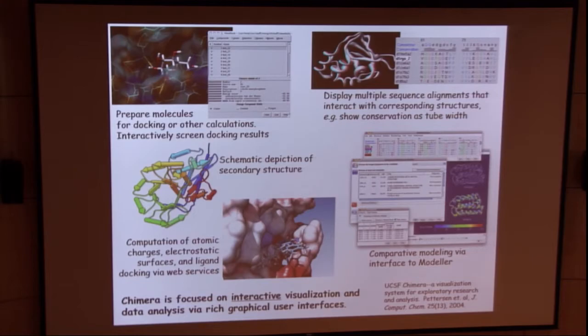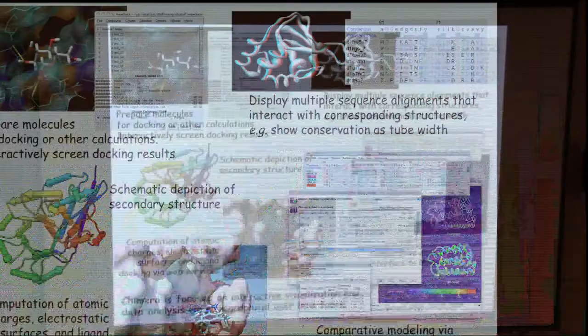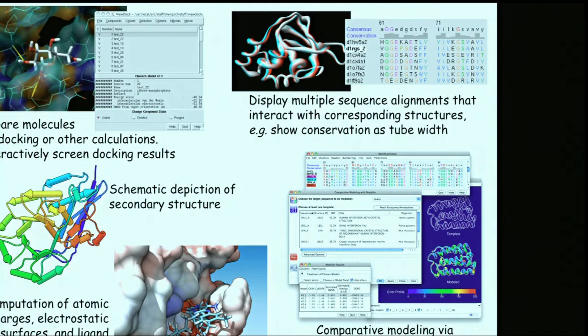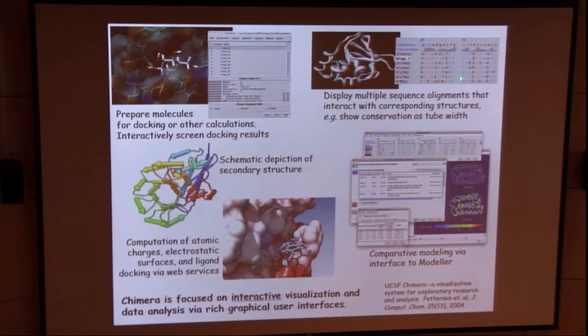I don't have time today to talk about the breadth of display and analysis capable with Chimera, but I've sort of put on this slide and the next slide just a few little tidbits so that you can see the kind of things where you can display both sequence alignments and structural alignments and facetly move back and forth between either structure space or sequence space, highlighting or modifying parts in either.